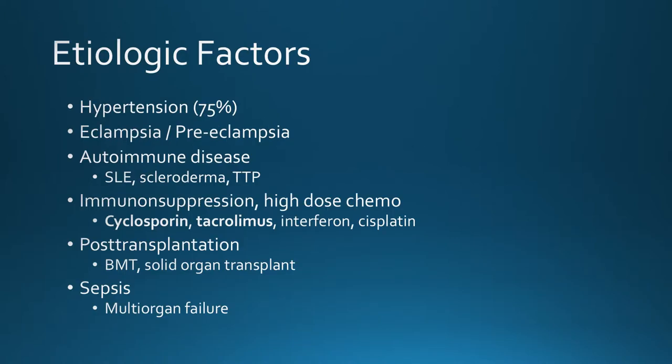There are many associated etiologic factors. About three-quarters of patients will have hypertension, but that means 25% will have normal blood pressure. It's associated with eclampsia and preeclampsia, autoimmune diseases such as lupus, scleroderma, and TTP, immunosuppressive drugs — especially cyclosporine and tacrolimus, most commonly seen after solid organ and bone marrow transplants — and also with sepsis and multi-organ failure.